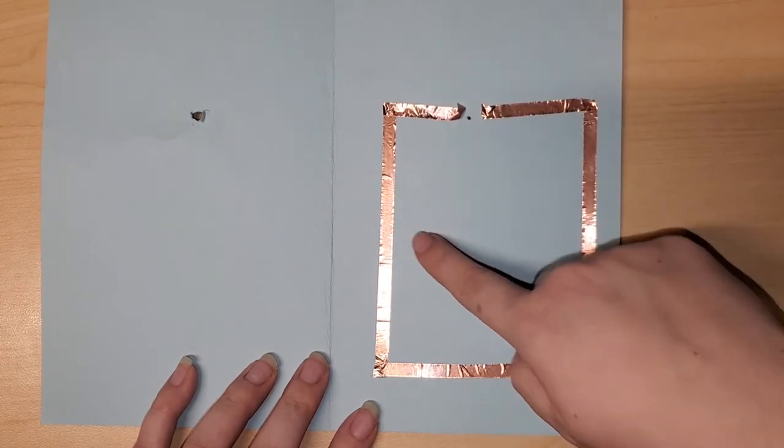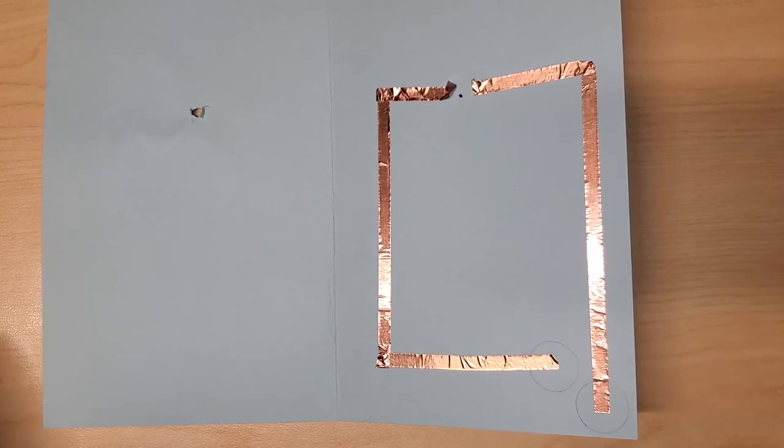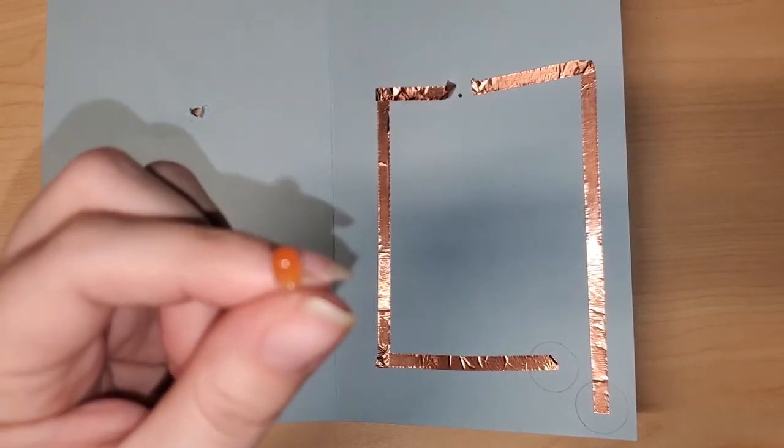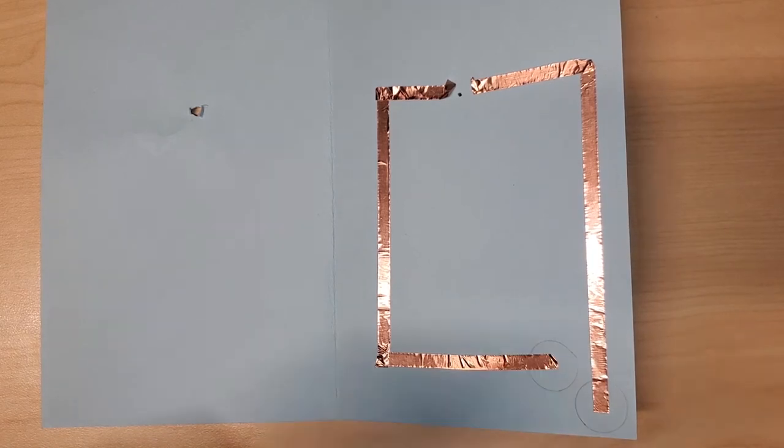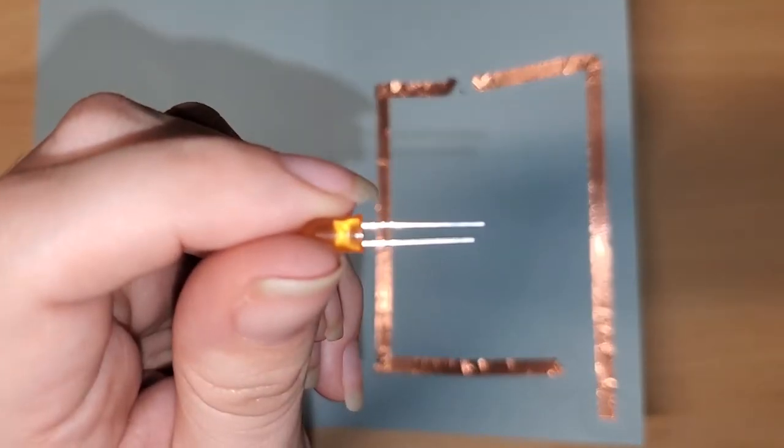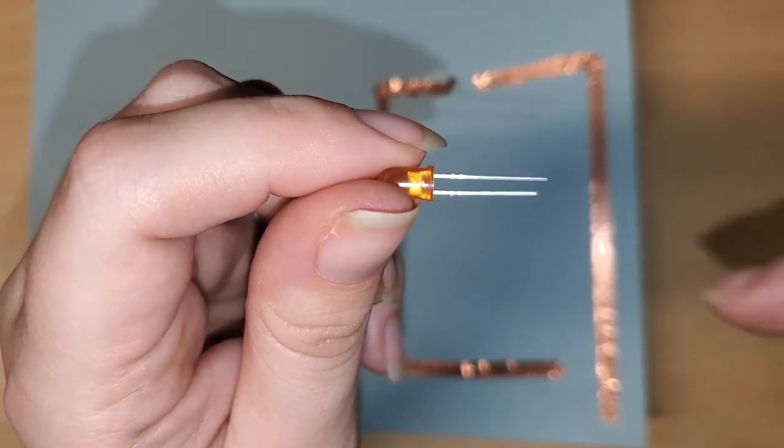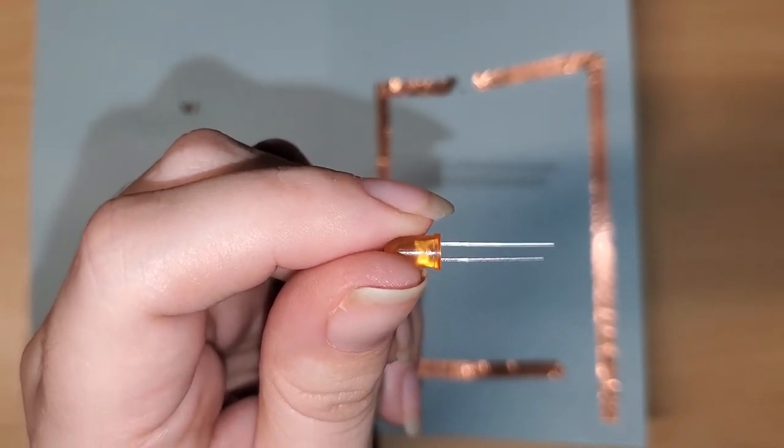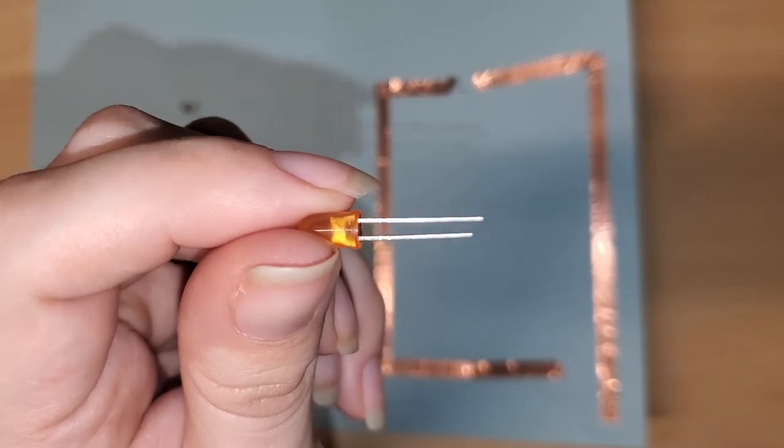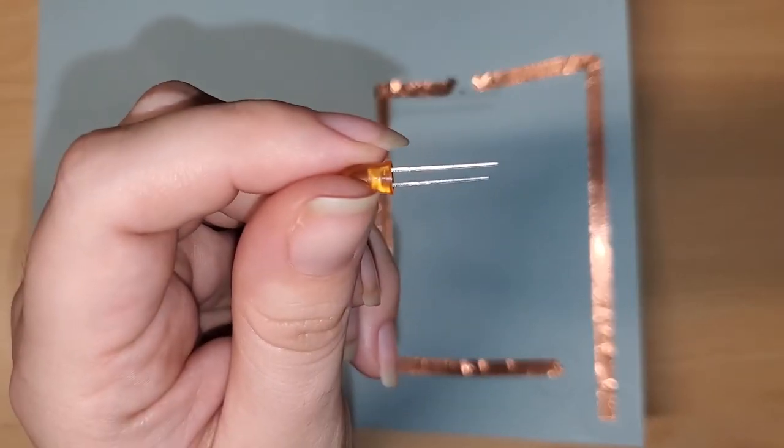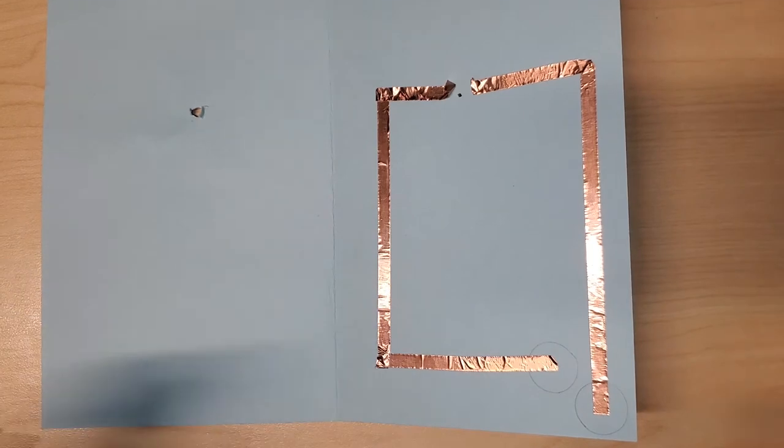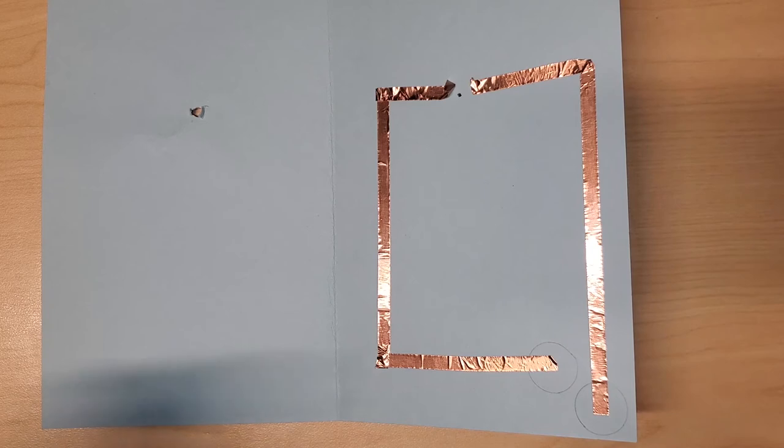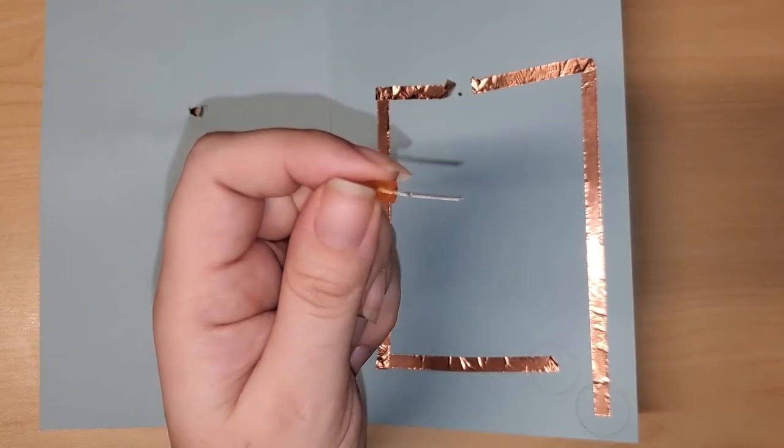All right, once we've got all of our copper tape down all lovely like that, this is where the fun begins. So we are going to bring in our LED. Again I went with the orange one for the snowman. And if you look at that LED, if you look real close you'll see that there is a longer pin and a shorter pin. So the longer pin is called the cathode and that is what connects to our positive source. And then the shorter pin is called the anode and that connects to our negative source.